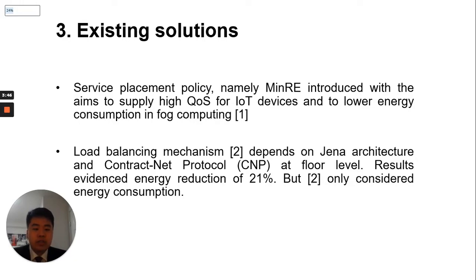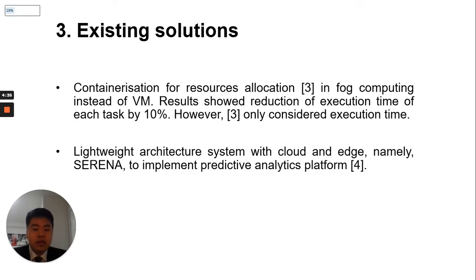This chapter discusses four main existing solutions. First, service placement policy MinRe, introduced to supply high quality of service for IoT devices and lower energy consumption in fog computing — simulation experiments showed MinRe outperformed cloud-only, HWatt, and resource-aware approaches. Second, a load balancing mechanism based on GINR architecture and contract NEC protocol, which reduced energy consumption by 21%, though the authors did not consider other performance metrics. Third, containerization in fog computing, which reduced execution time by 10% compared with virtual machines, but similarly did not consider other performance metrics.